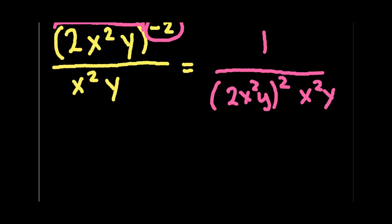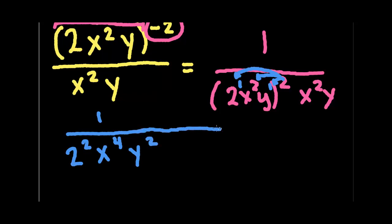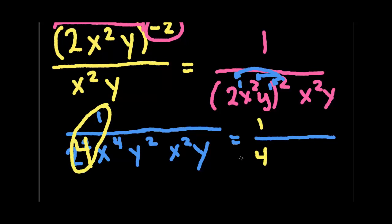So the next step now is to distribute that power we have here. Remember, anything without an exponent, we want to stick a 1 on. And then we want to distribute this 2 to each of these. So we're going to have 1 over and we're going to do 2 to the 1 times 2, which is 2. x to the 2 times 2, which is 4. y to the 1 times 2, which is 2. And we still have the x to the 2 and the y that was already down here. So the next thing we want to do is combine the like terms. So numerically, 2 squared is 4 and 1 fourth is already in simplest form.